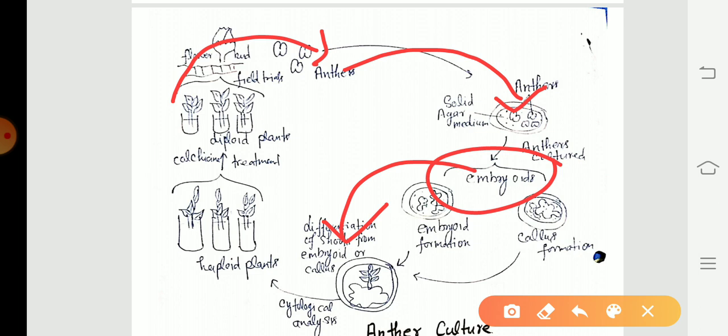That structure develops into haploid plants. These haploid plants are converted into homozygous diploid plants with the help of colchicine chemical. Colchicine is very important because haploid plants are treated with colchicine to double their chromosomes before they flower.